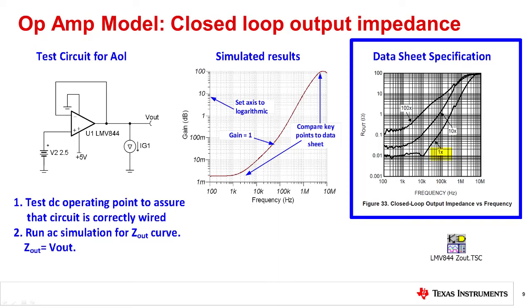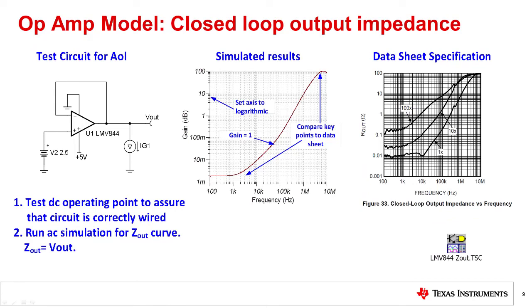G equals 1, G equals 10, and G equals 100, indicating that these are closed loop output impedance curves, or Zout. Since this is closed loop impedance, the feedback network is set according to the required gain. This example shows a gain of 1, but other gains may be needed depending on the datasheet graph.